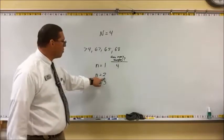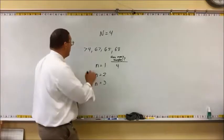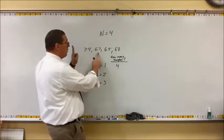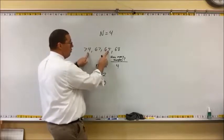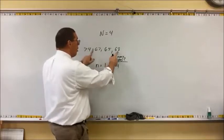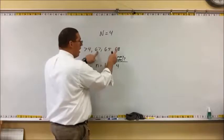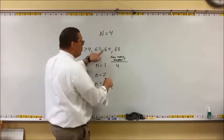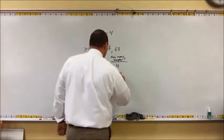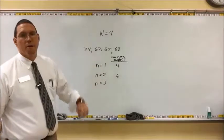What if my sample size was two? How many samples could I take? I could do this person and this person — that's one. Or this person and this person — two. Or this person and this person — three. Or these two — four. Or these two — five. Or these two — six. So there are six possible samples that I can take if my sample size is two.